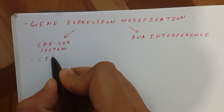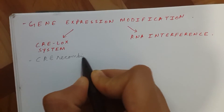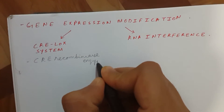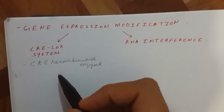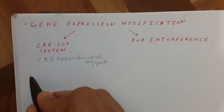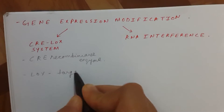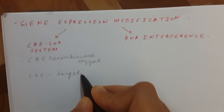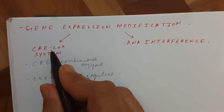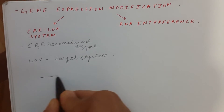What is the CRE LOX system? CRE refers to the CRE recombinase enzyme — it is the name of a recombinase enzyme. LOX means the target sequence on which the CRE recombinase enzyme is going to work. That is why it is called the CRE LOX system.